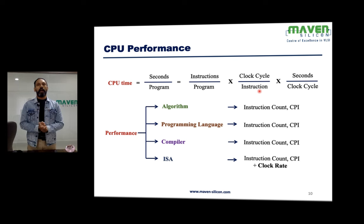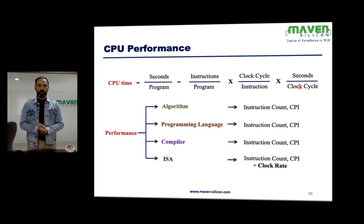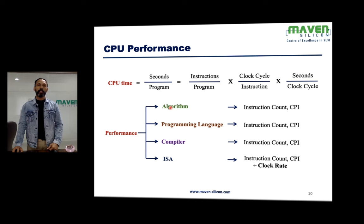CPI refers to how many clock cycles are needed to execute a particular instruction, and seconds per clock cycle is related to the clock frequency — the clock period. So the CPU time formula is: instructions per program × clock cycles per instruction × seconds per clock cycle. Overall performance depends on various parameters.